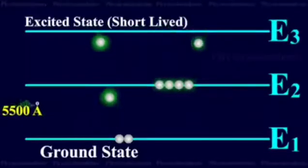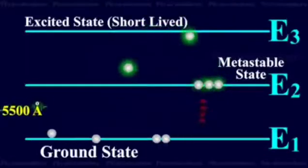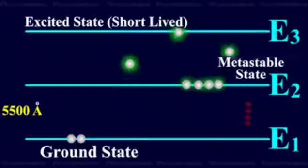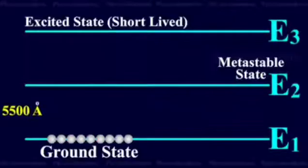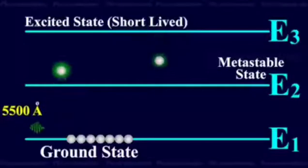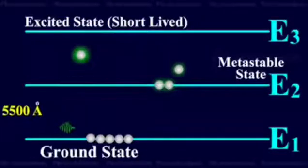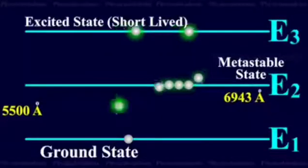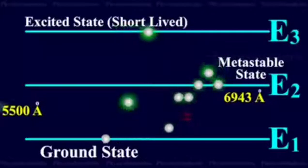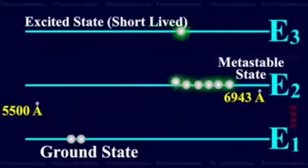Population inversion is attained in the crystal. Atoms then undergo spontaneous emission transitioning back to the ground state, and the radiation emitted is red light.